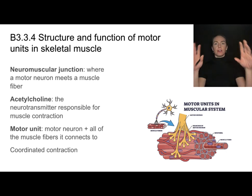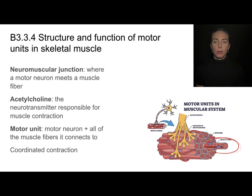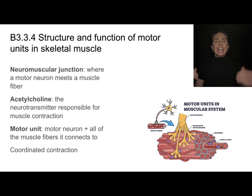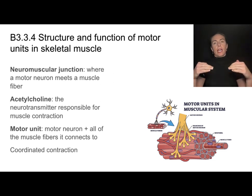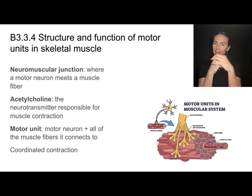Acetylcholine will be passed from the nerve to the motor unit or to that muscle. This neuron and the muscle fibers that it controls is called the motor unit. One neuron can connect to multiple muscle fibers — each of these long skinny things is a muscle fiber or muscle cell — and that helps to coordinate their contraction. If we want an entire muscle made up of many muscle fibers to all contract at the same time, it's helpful that they're all connected to the same nerve.